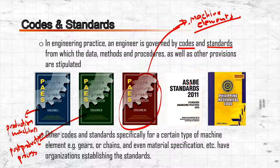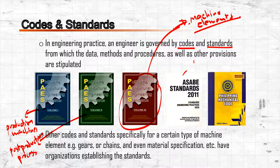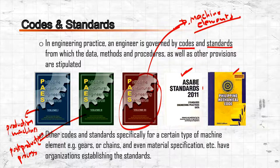Another standard is the American Society of Agricultural and Biological Engineers (ASABE) standards, which includes not just machinery but also structures, processing, and irrigation equipment. We also refer to the Philippine Mechanical Code since we are dealing with mechanical systems, even if limited to agricultural equipment.